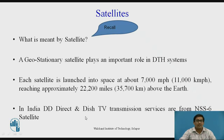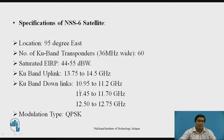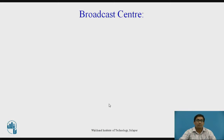In India, DD Direct and TV transmission services use NSS-6 satellites. The specifications of NSS-6 are important: the number of KU band transponders is 60, the modulation type used is QPSK, and the uplink frequency is 13.75 to 14.5 GHz while the downlink frequency range is 10.95 to 12.75 GHz, using different frequency bands.